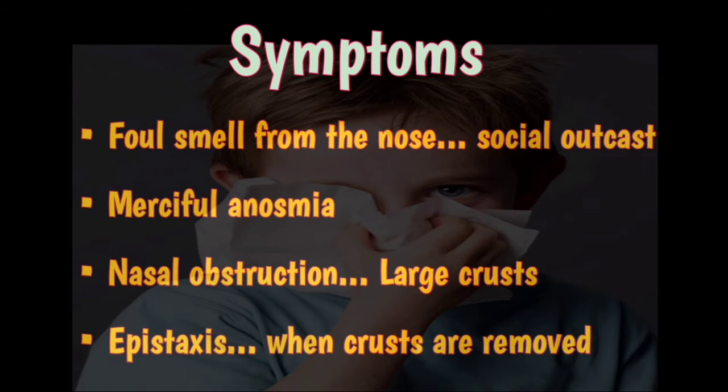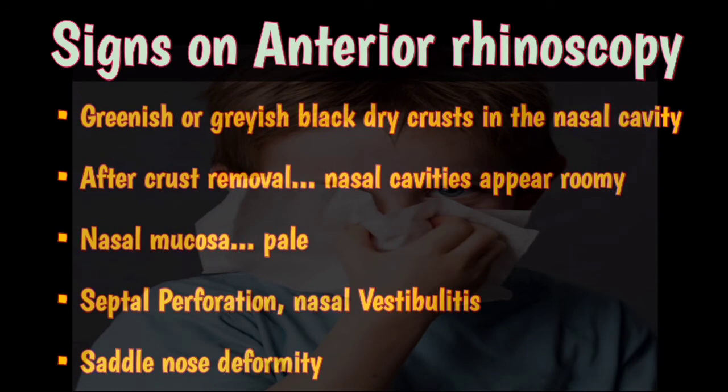The patient with primary atrophic rhinitis presents with the following symptoms: foul smell from the nose, making the patient a social outcast, but the patient themselves is unaware of the smell due to merciful anosmia, which is due to degeneration of the nerve elements. There is nasal obstruction, and large crusts are formed in the nose. When these crusts are removed, there is epistaxis or nosebleed. Anterior rhinoscopy shows greenish or grayish-black dry crusts in the nasal cavity.